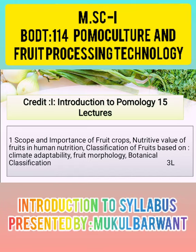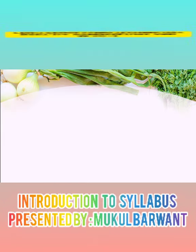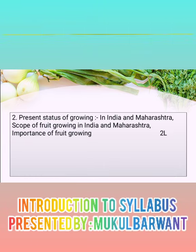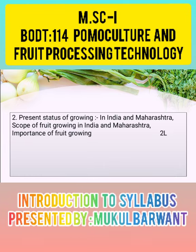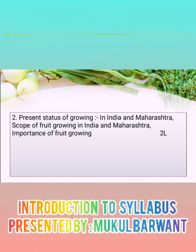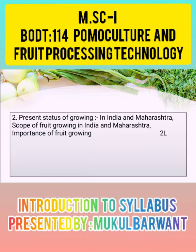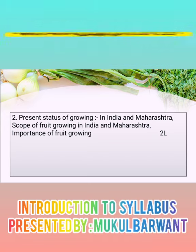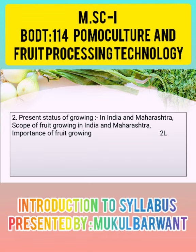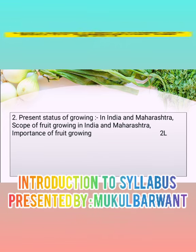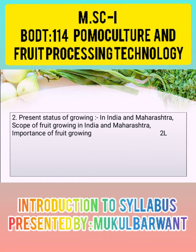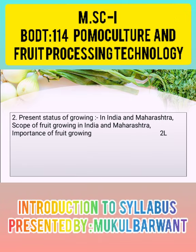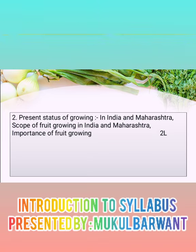The second chapter is the present status of fruit in India as well as in Maharashtra. Present status means which type of fruit are cultivated by the farmers of India, and which type of fruit are in the market in Maharashtra as well as India — that we are going to see in this chapter.